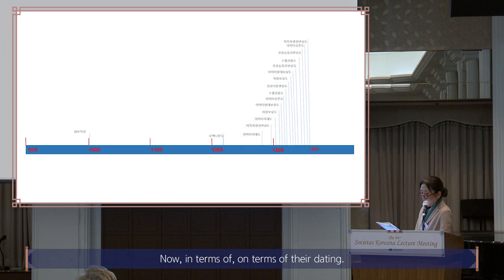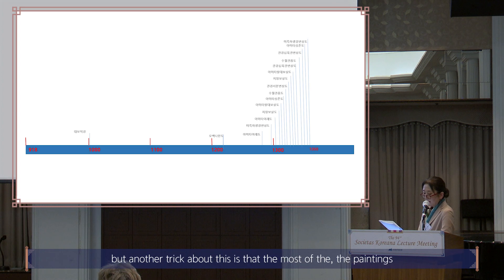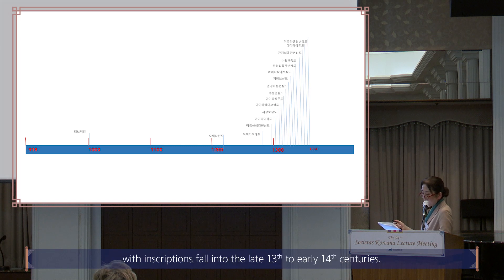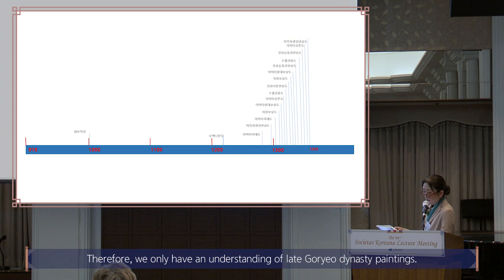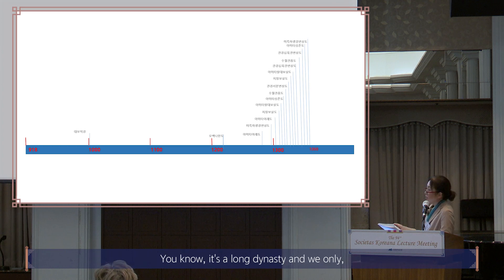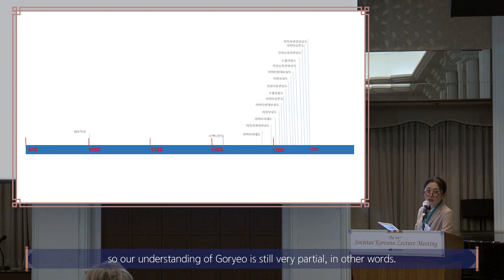In terms of their dating, most of the paintings with inscriptions fall into the late 13th to early 14th centuries. Therefore, we only have an understanding of late Koryo dynasty paintings — it's a long dynasty, and we just have a concentration of Buddhist paintings from the late Koryo period. So our understanding of Koryo painting is still very partial.